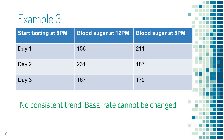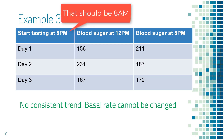In this next example, he wanted to test the basal rate in the afternoon and evening, from 12 p.m. to 8 p.m. So he started fasting at 8 a.m., checked blood sugar at 12 p.m., and checked again at 8 p.m. He did it on three different days. His blood sugar went up from 156 to 211 on the first day, went down from 231 to 187 on the second day, and stayed about the same from 167 to 172 on the third day. There is no consistent trend — some days it went up, some days it went down — so he cannot change basal rate. Blood sugar is influenced by many things like stress, infection, pain, medication change, and so on, so you may not see the same trend every time.